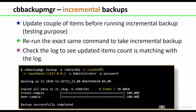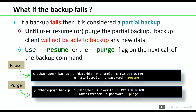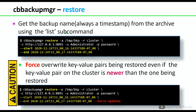For incremental backups, we can test this by updating a few documents and triggering the same command, which will take an incremental backup. If a backup fails, it is considered a partial backup. Until you resume or purge the partial backup, the backup client will not be able to backup any new data — so we must resume or purge before triggering the next backup command.